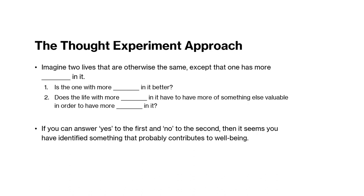One challenge for objective list theorists is deciding what goes on the list — what to put on there and what to leave off. One very reasonable approach is Brad Hooker's, from the reading, which uses a kind of thought experiment. You have to forgive him for using it somewhat exhaustively — one example probably would have done it — but philosophers very much like to get everything spelled out clearly. It's better to be clear and complete, even at the expense of beating something to death a little, than to be unclear or incomplete.